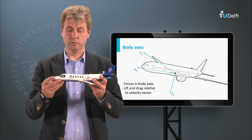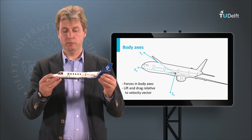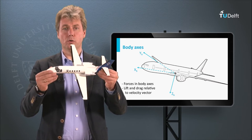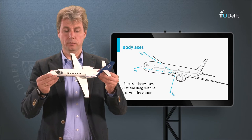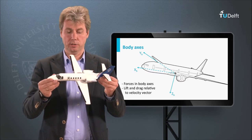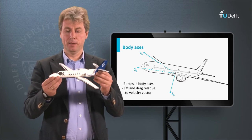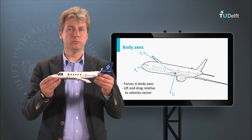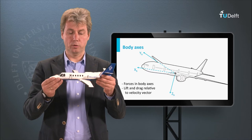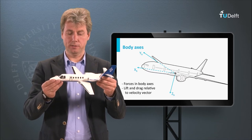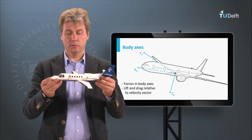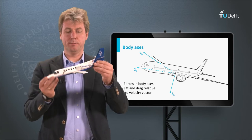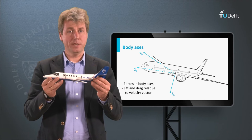We use this axis to describe the rotations. The rotation around the X axis we call roll — that is the roll angle, or bank as it is also called, to bank the aircraft. So that is the rotation around the X axis: roll or bank. The rotation around the Y axis — nose up, nose down — is what we call the pitch behavior.